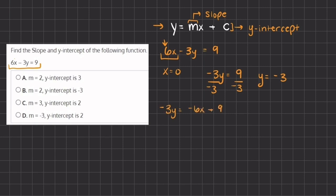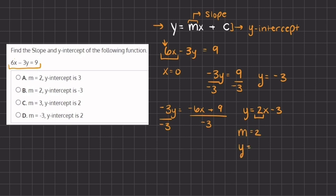Now in order to completely be in slope-intercept form, we need to isolate y. We are going to divide by negative 3 on both sides, and we are left with y equals negative 6 divided by negative 3, which gives us positive 2x, and positive 9 divided by negative 3 gives us negative 3. So now we are in slope-intercept form, and we can tell that the coefficient in front of x is 2, so our slope is 2, and our y-intercept is negative 3.